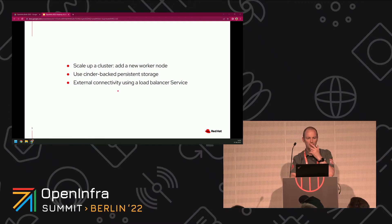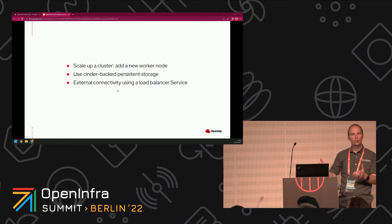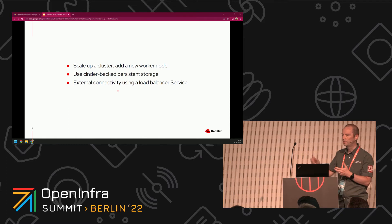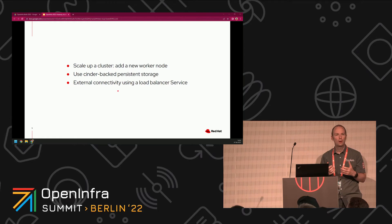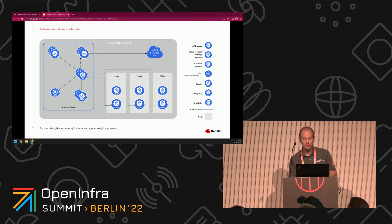Rather than just talking about the components themselves and listing them, I'm going to try and talk through three different scenarios. I'm going to talk about what happens when we scale up a cluster — if we add a new node. I'm going to talk about what happens when we deploy a pod using some persistent storage. And I'm going to talk about how we can access an application running inside our cluster from outside the cluster.